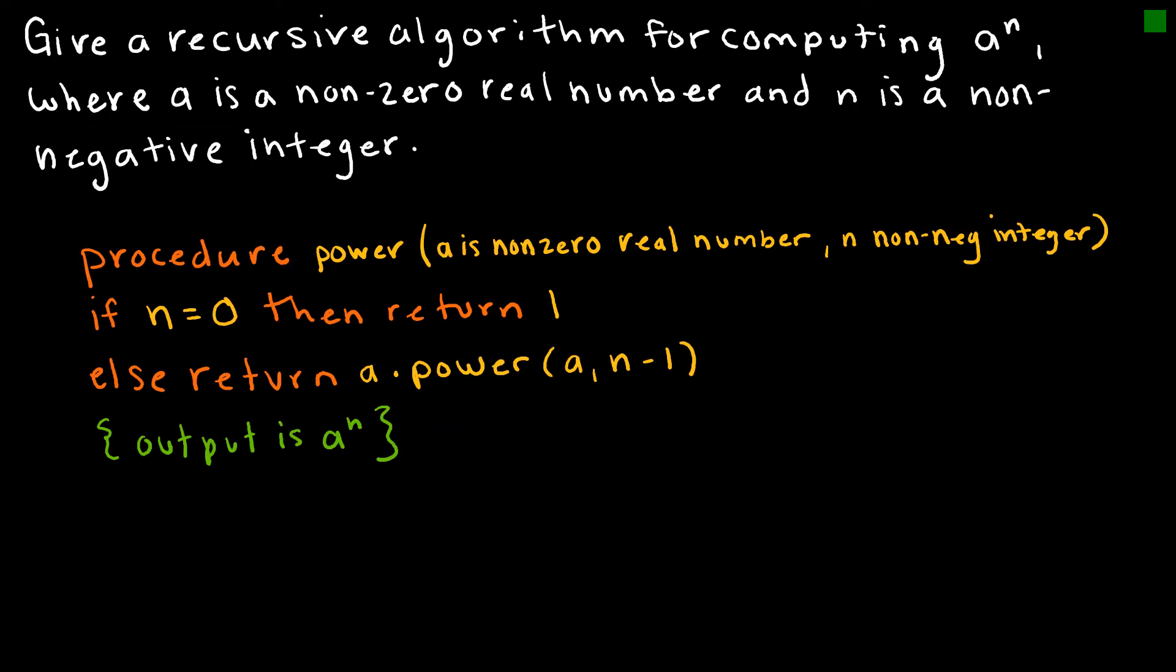Let's look at one more algorithm. This says give a recursive algorithm for computing a to the n, where a is a non-zero real number and n is a non-negative integer. So again, my procedure is just a power. I'm taking some number to a power. And the process says if n is 0, then return 1, because that would mean it's some number to the 0 power, which is always 1. Otherwise, we're going to return a times the power of a, n minus 1.